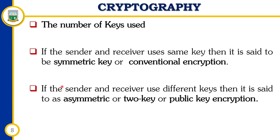Moving on to the number of keys: in symmetric key encryption, also termed secret key, single key, or shared key encryption, both the sender and the receiver share the same key, which is used for both encryption and decryption of the data. The two keys may be identical or trivially related in one way or the other, with a simple transformation required to go between them.